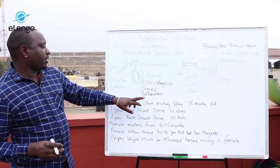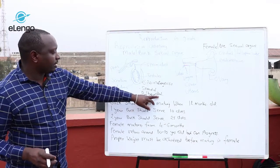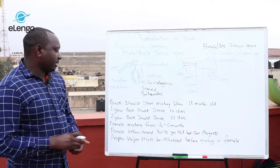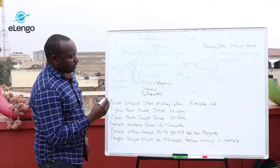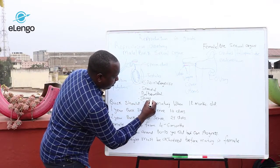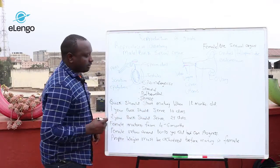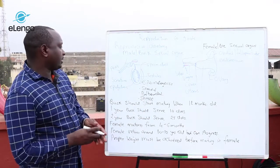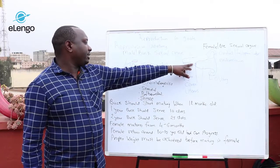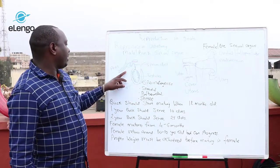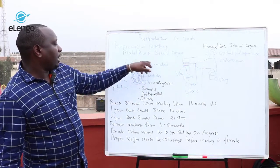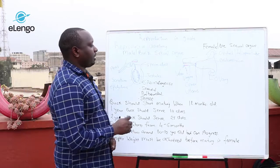For this activity to take place, seminal fluids together with the bulbourethral fluids and sperm cells form semen. Semen is then deposited in the vagina by the penis of the buck.